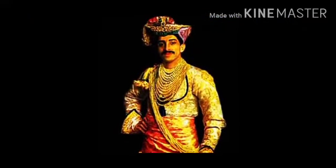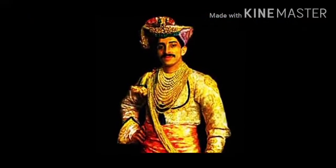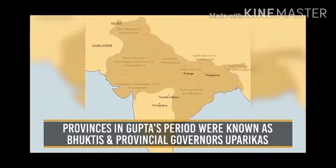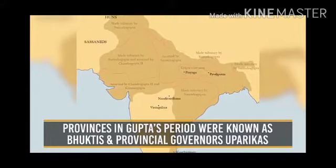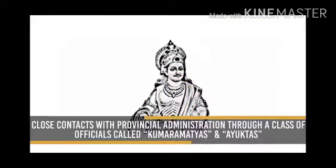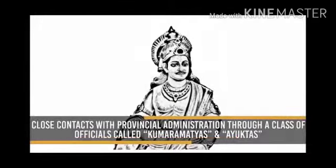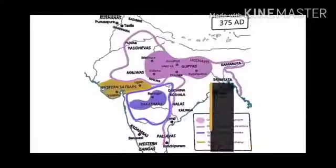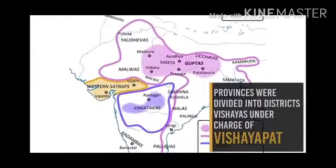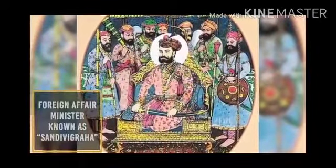When we come to Gupta administration, the Guptas governed by adopting various policies. Provinces in the Gupta period were known as Buktis, and Provincial Governors were called Uparikas. They maintained close contact with provincial administration through officials called Kumaramatyas and Ayikas. Provinces were divided into districts called Vishayas, and the foreign affairs minister was known as Sandivigraha.